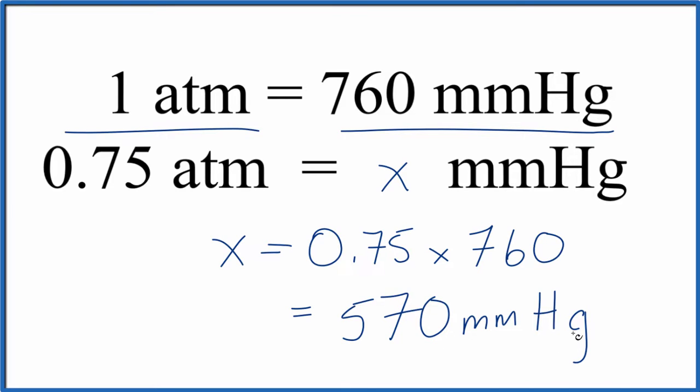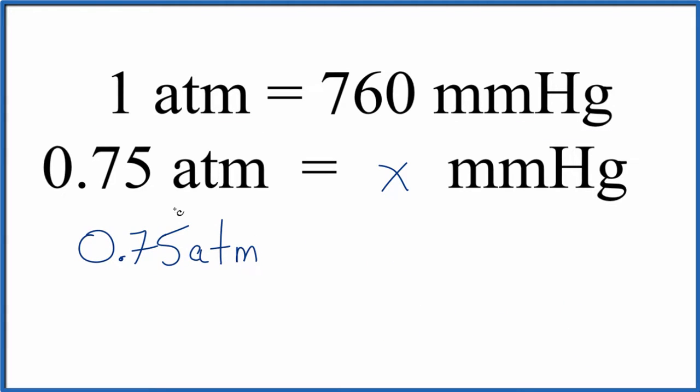Here's the way your teacher probably wants you to do it though. We start with our 0.75 atmospheres. We're going to multiply this by a conversion factor, and we get that from up here, which you've hopefully memorized.